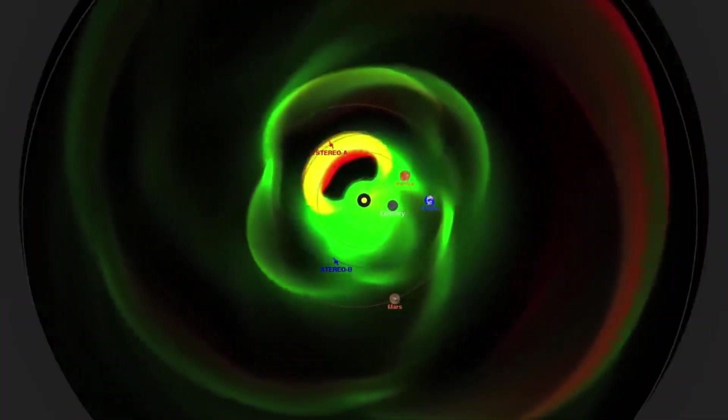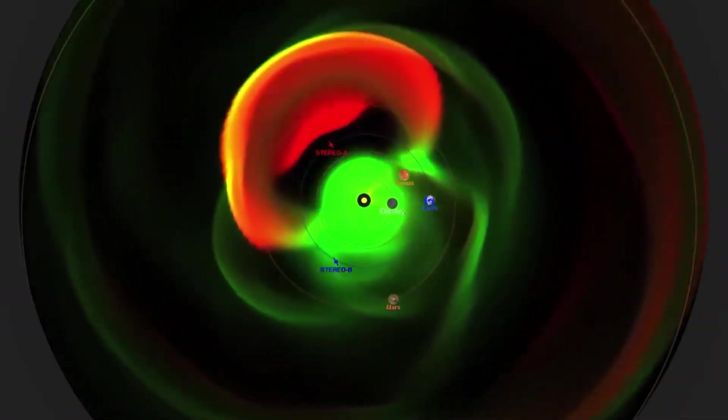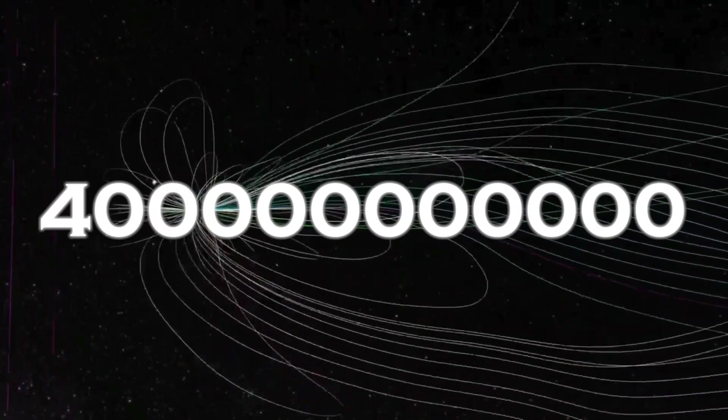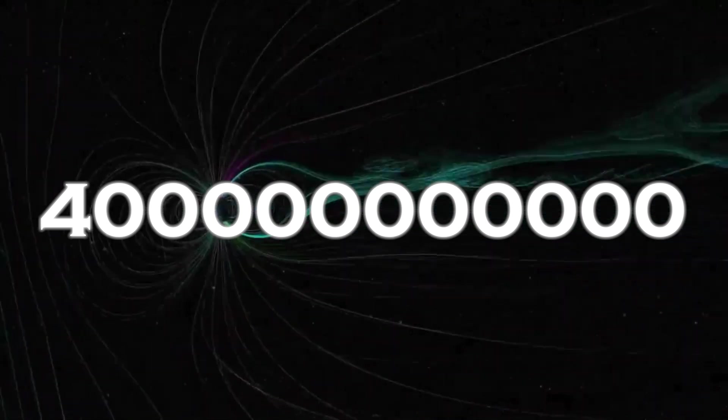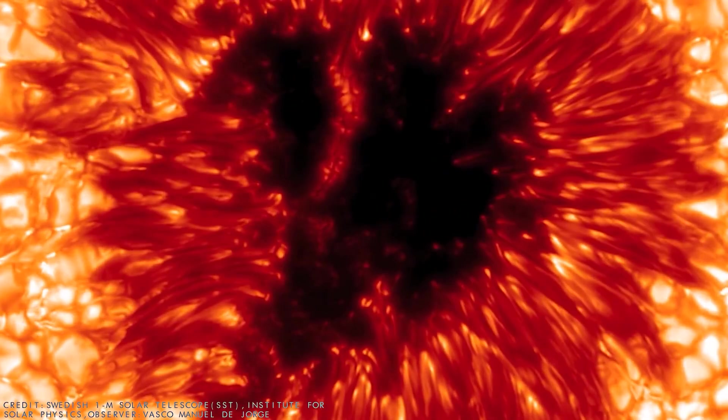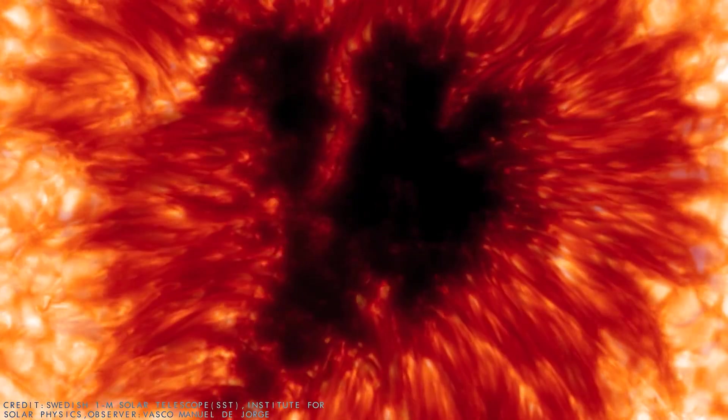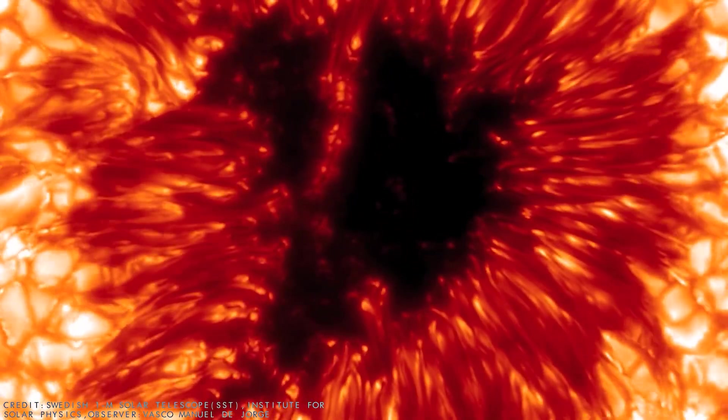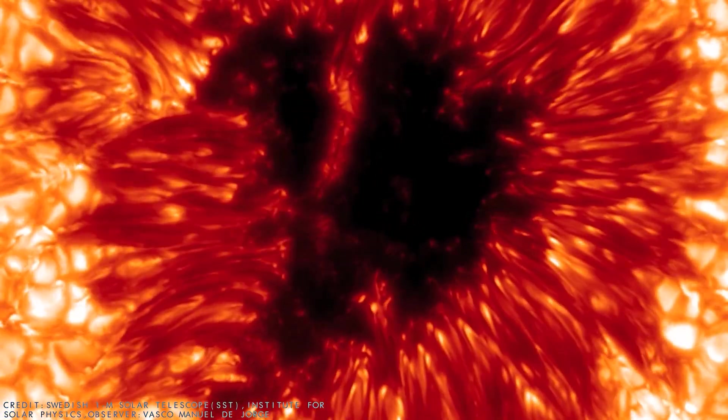Betelgeuse's corona, however, surprised scientists by ejecting an amount of mass 400 billion times greater than the average coronal mass ejection. This cloud of hot gas released by the star temporarily covered some of its light, leading to the unusual dimming observed.